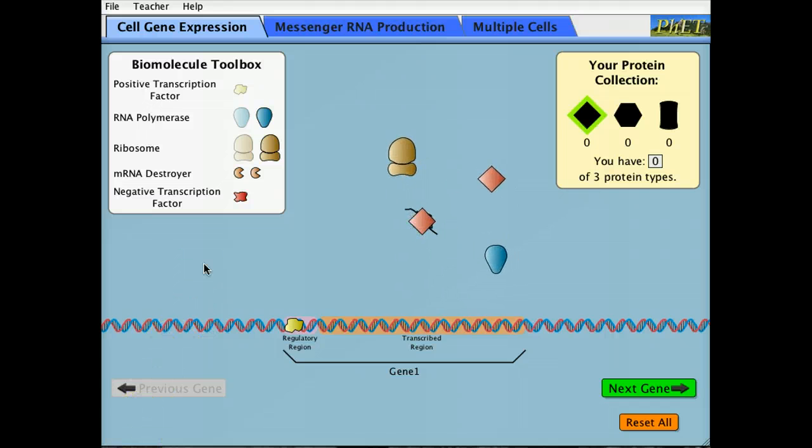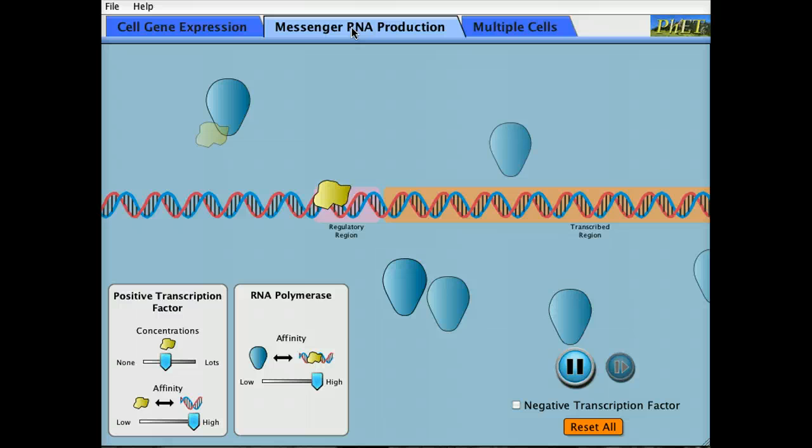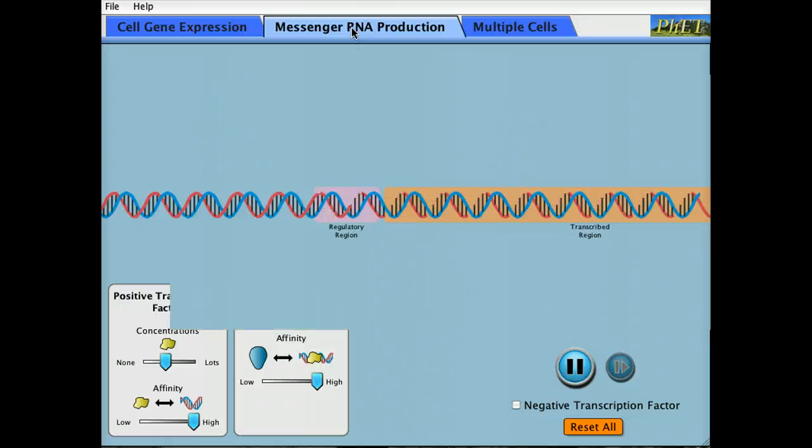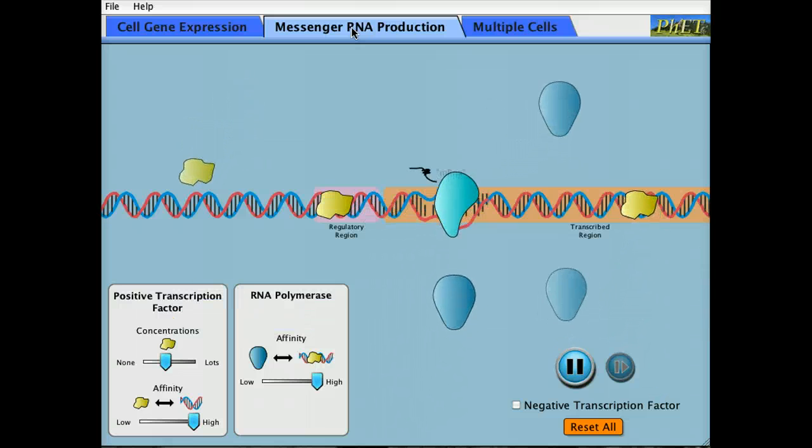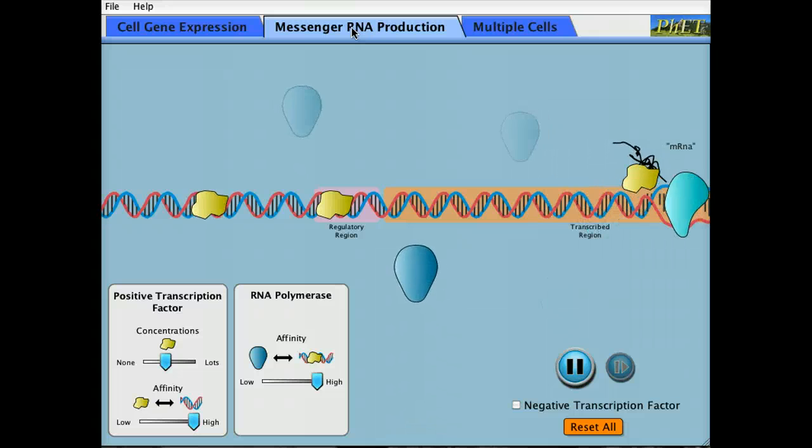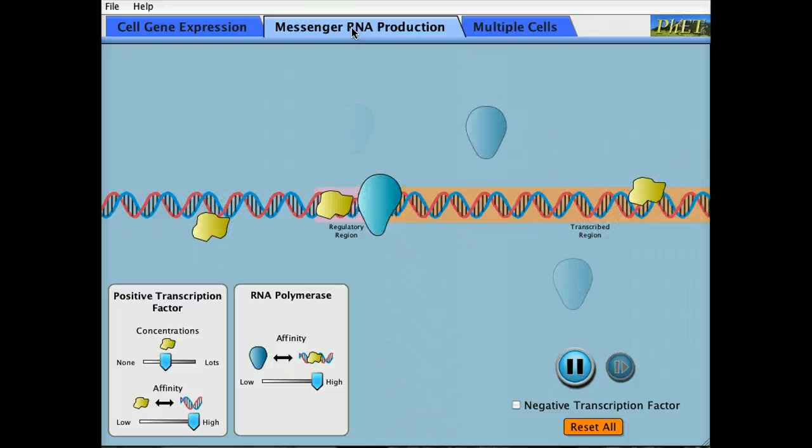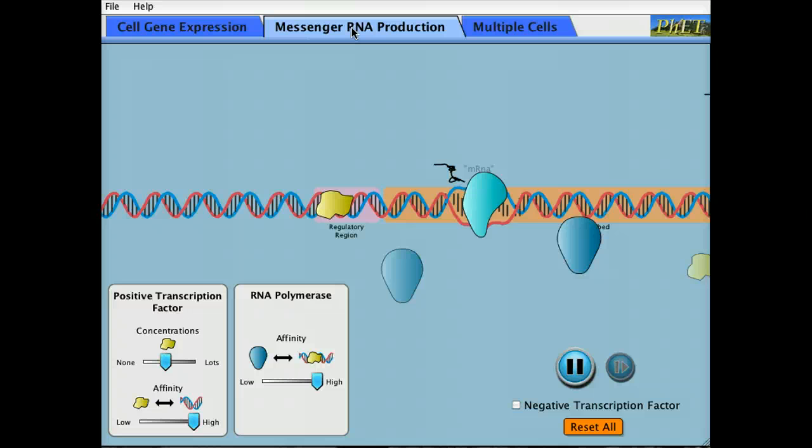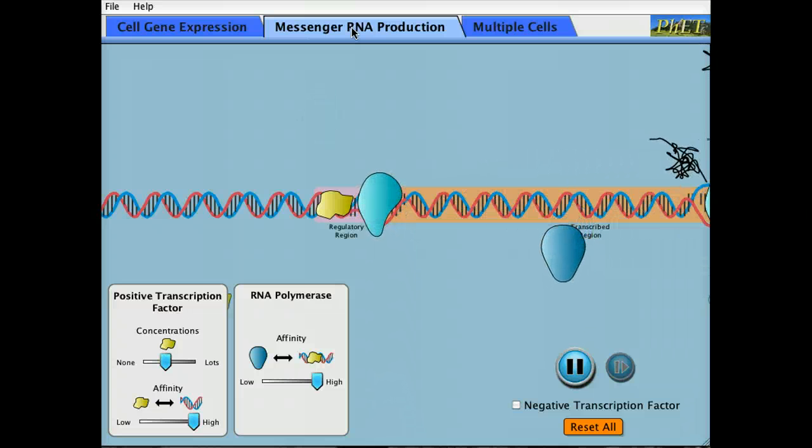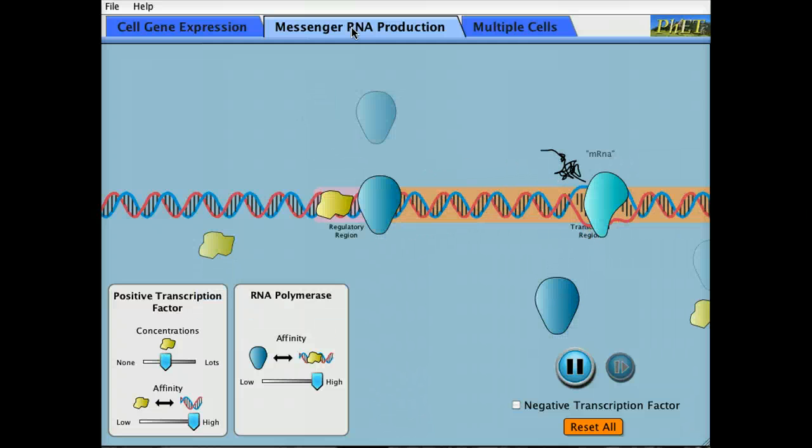So why is the expression level of GFP in the cell noisy? Let's go to the second tab of messenger RNA production. Here shows you a simulation of what's going on inside the cell. Transcription factors are binding to the DNA in various places. Some bind randomly and they just come back off. Others bind to the regulatory region and when polymerase binds, an RNA is transcribed.